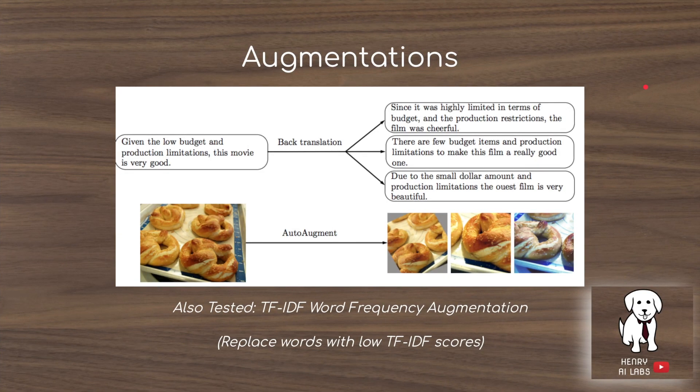These are the augmentations — the unsupervised data augmentation component. Back translation is an augmentation technique used in text datasets that is really interesting. What they do is take a sentence like, 'Given the low budget and production limitations, this movie is very good,' translate it into French, and then translate it back to English.